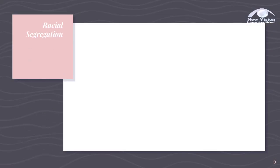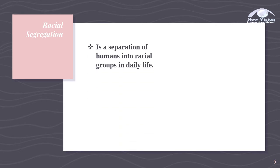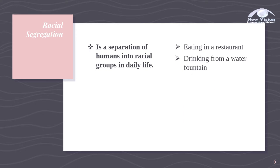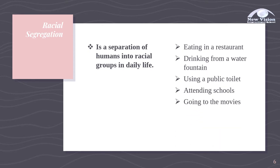What is segregation or racial segregation? It is a separation of humans into racial groups in daily life. Examples of these separations are eating in a restaurant, drinking from a water fountain, using a public toilet, attending schools, and going to the movies.